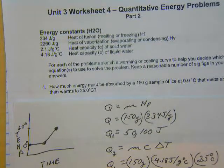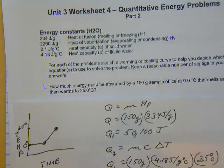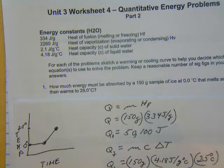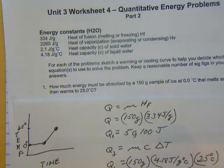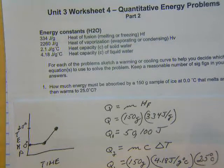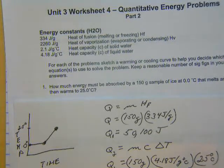That's Q2. Now we want the total. Total energy equals Q1 plus Q2. Q1 was 50,100 joules, plus Q2 was 15,600 joules. So our answer is 65,700 joules.